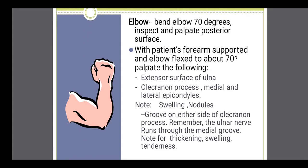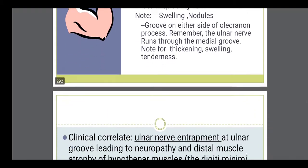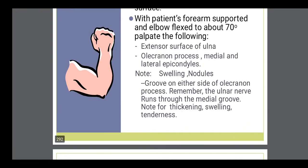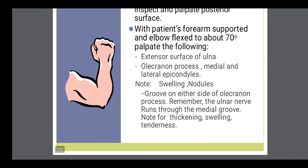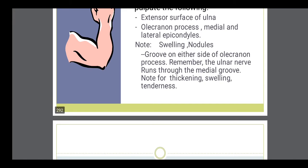The elbow joint is examined for extension and flexion. On the olecranon process, you also have to assess for the median nerve and ulnar nerve. Thickening, swelling, and tenderness, if present on the elbow joint, have to be assessed.